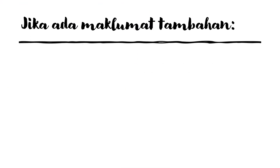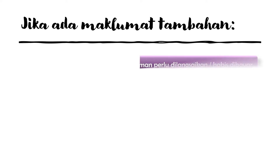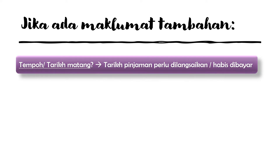But what if there are maklumat tambahan for pinjaman? What do some of these words mean? The first one: tempoh atau tarikh matang — tarikh pinjaman perlu dilangsaikan atau habis dibayar. For example, you took pinjaman for five years starting from 2021. Then the tarikh matang is 2026, which is when you should complete the bayaran balik for the pinjaman. That is what they call tarikh matang — when you finish paying the pinjaman.